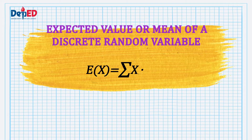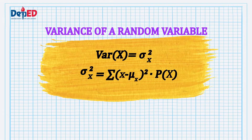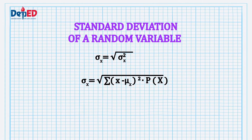Last week, we discussed the expected value or the mean value of a discrete random variable x with a given formula. We also discussed the variance of a random variable, which displays the variability or the dispersion of the random variables. It shows the distance of a random variable from its mean, which can be computed using the given formula. Lastly, we focused on the standard deviation of random variable x, which is the square root of the variance as shown in the formula.